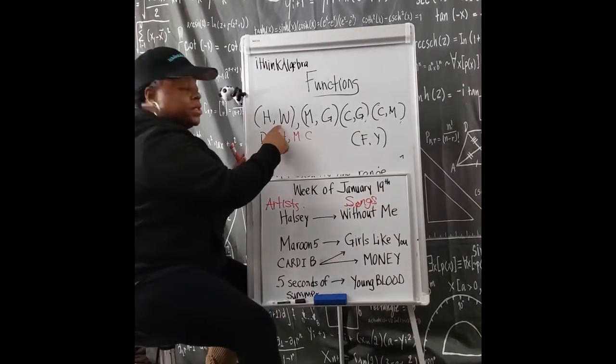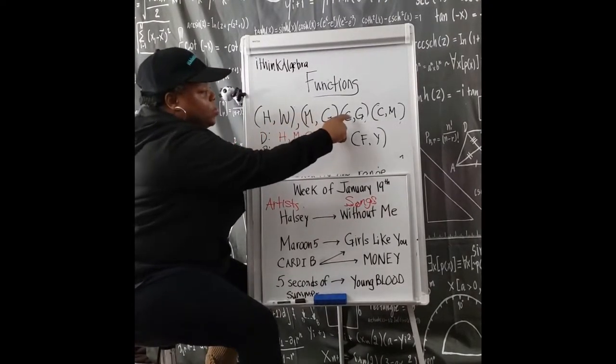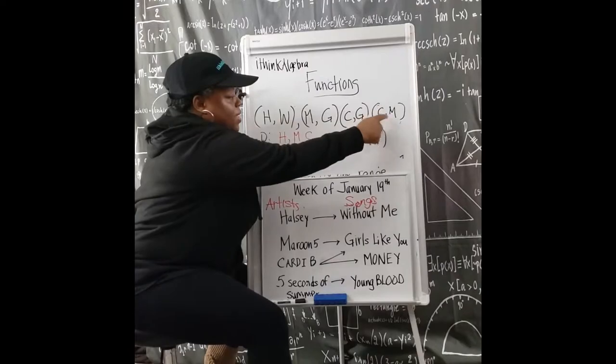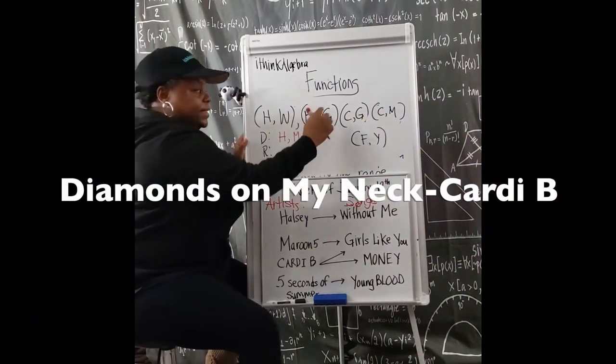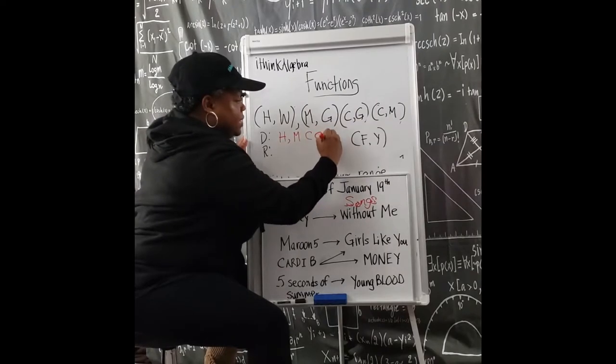So H goes with W. M goes with G. C goes with G. C goes with M. And F goes with Y. So I have H, M, C, C, F.